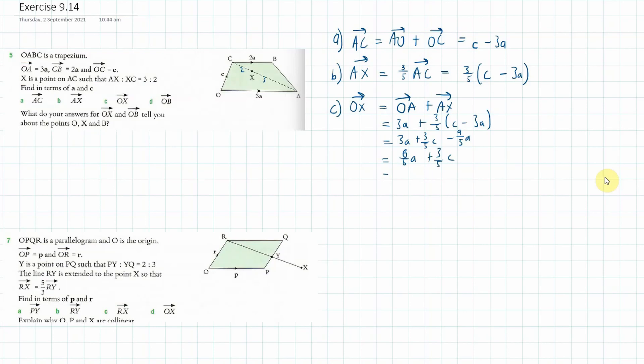And so I can write that as maybe 2 fifths. No, hang on. What am I doing? 3 fifths A plus C. There we go. That's probably what I'm going to do there.